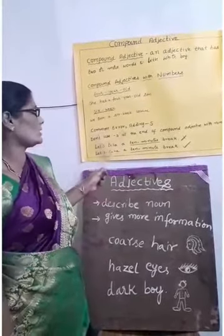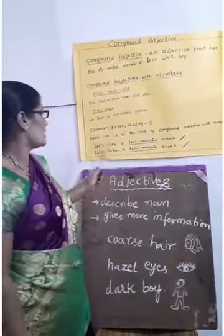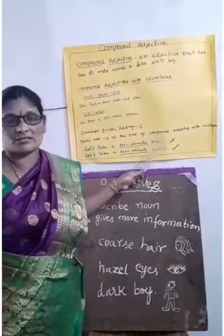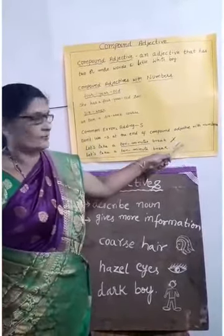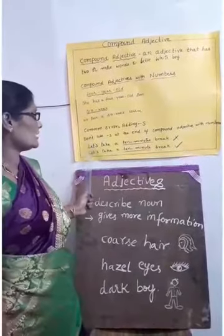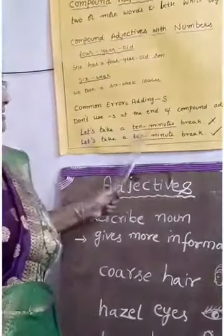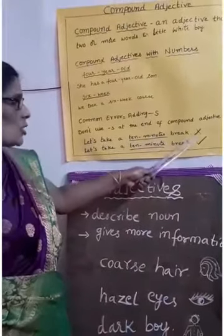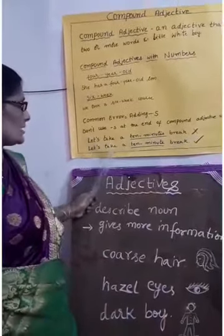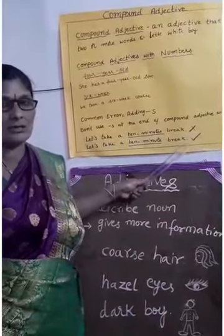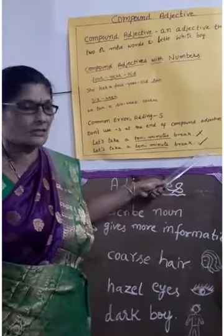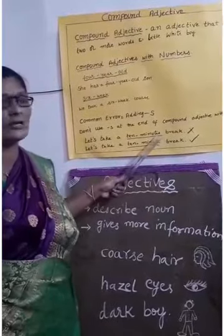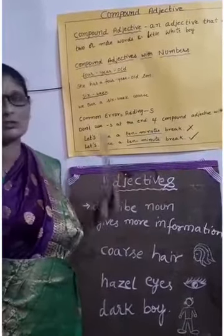A common error is adding 's' — don't add 's' at the end of the compound adjective when using numbers. For example, 'Let's take a 10 minutes break' is wrong. 'Let's take a 10-minute break' is correct, because we should not add 's' at the end of the compound adjective with numbers.